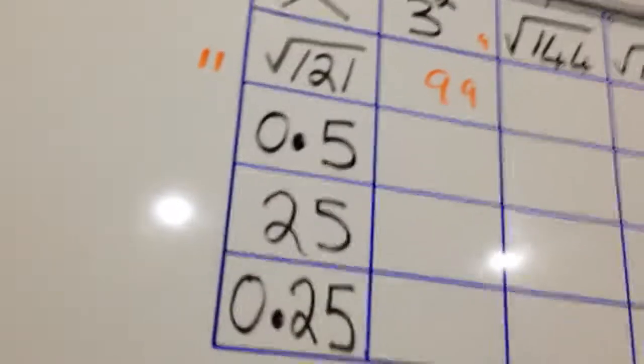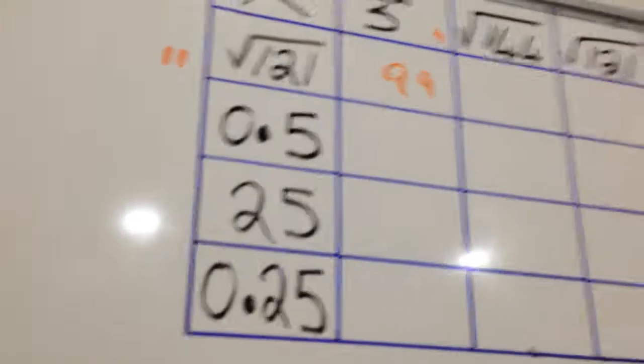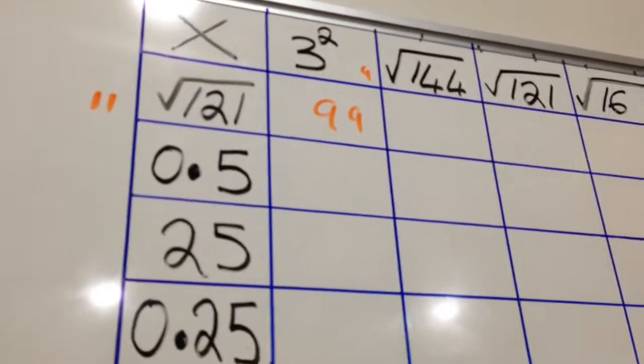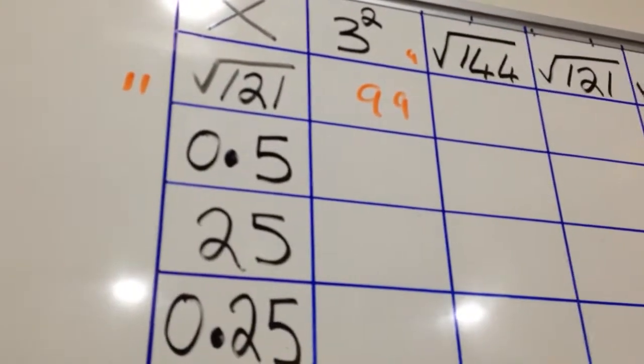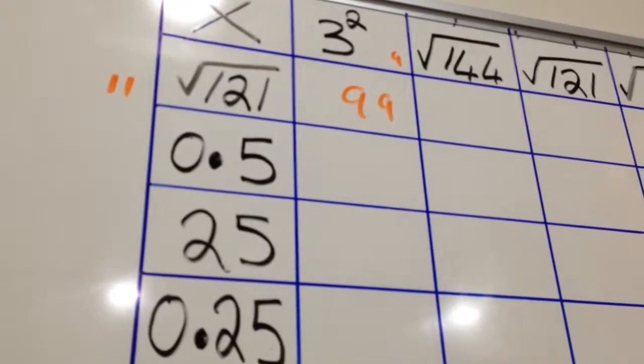Okay, one more. The square root of 121 multiplied by the square root of 144, what would that answer be? This one's 11, so this one's 12 plus 23 is 12. What would that be? 132. Brilliant, wow.